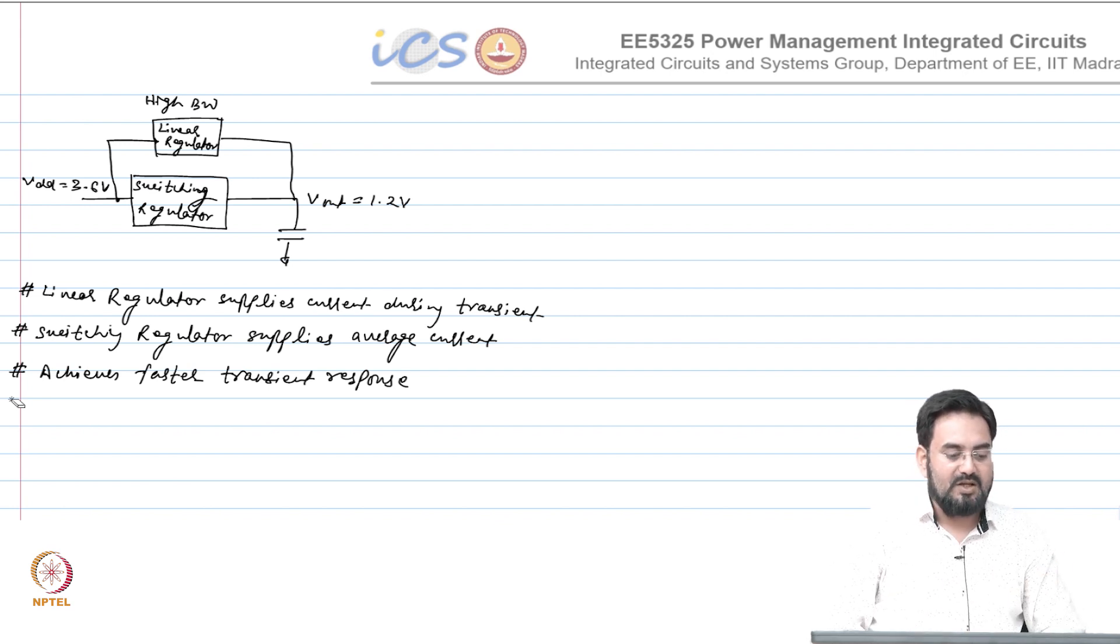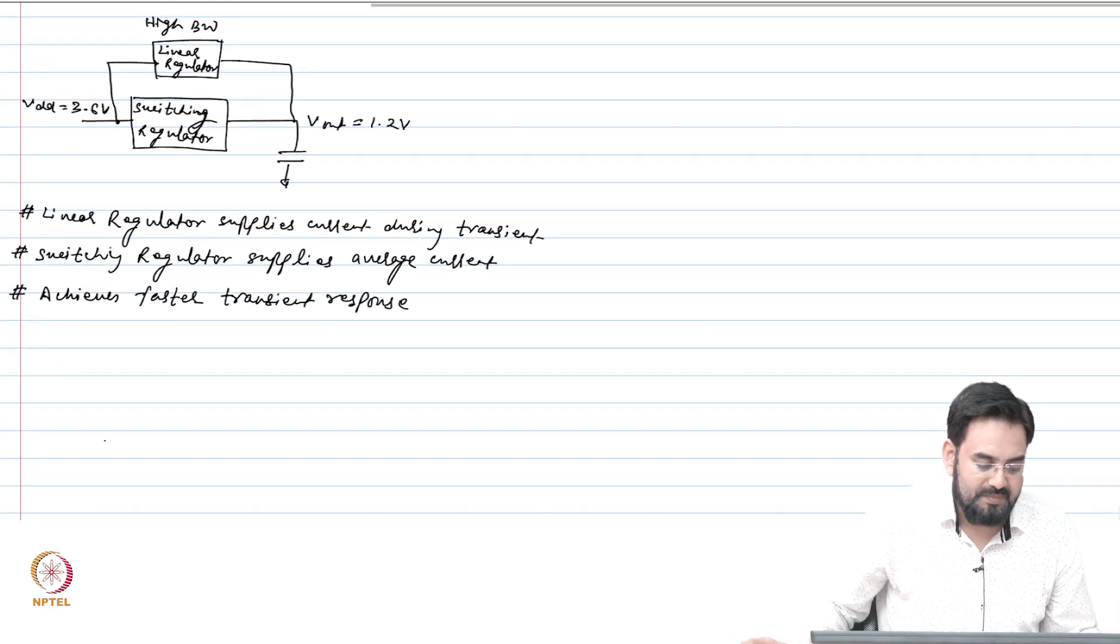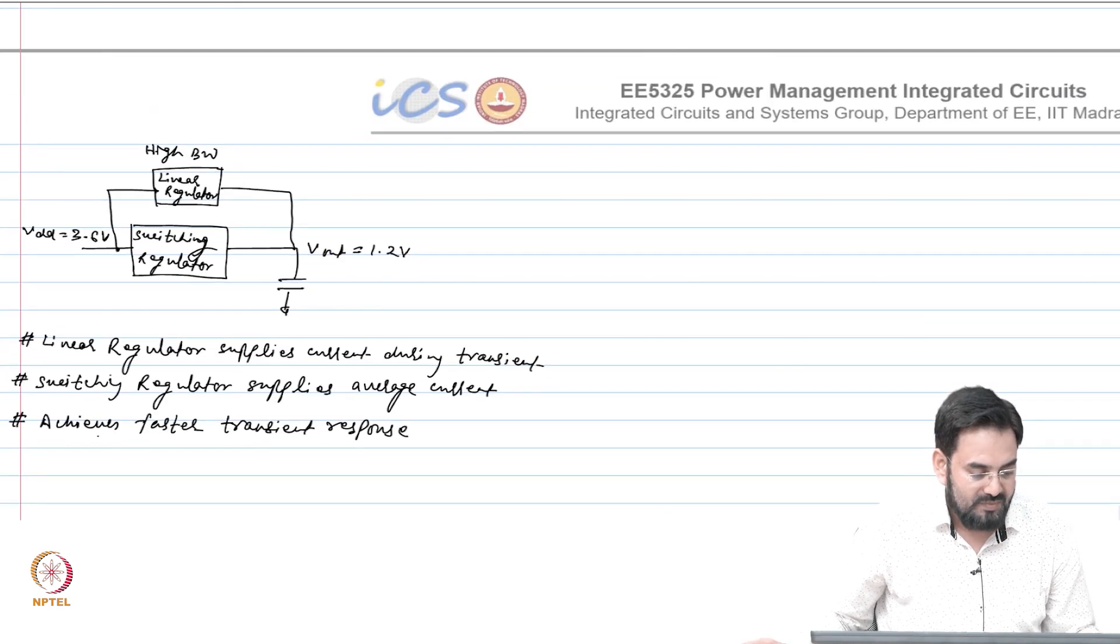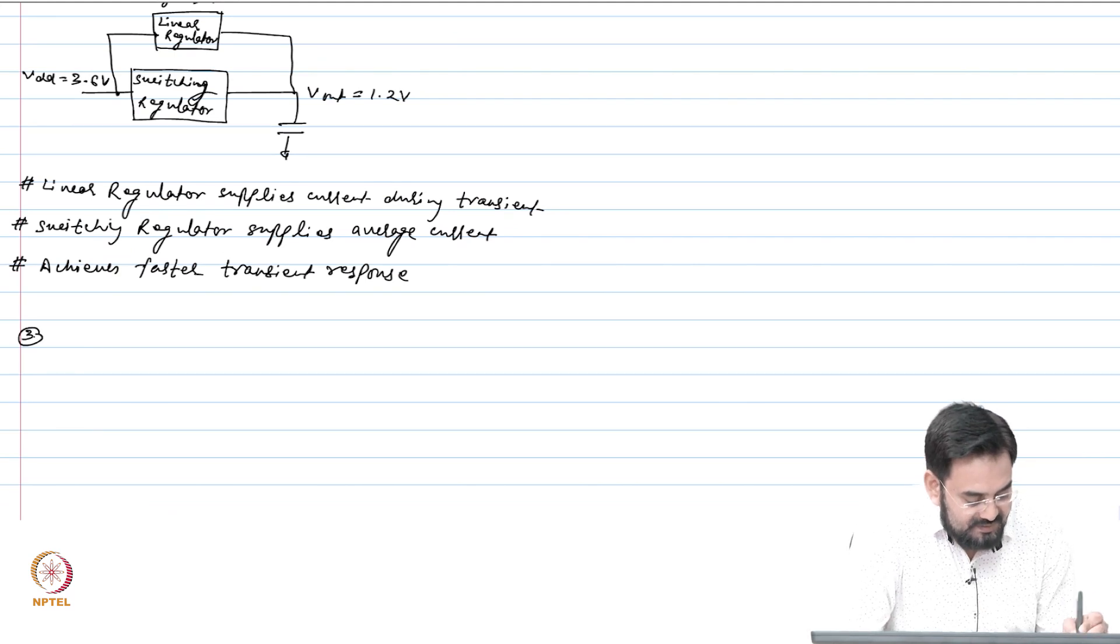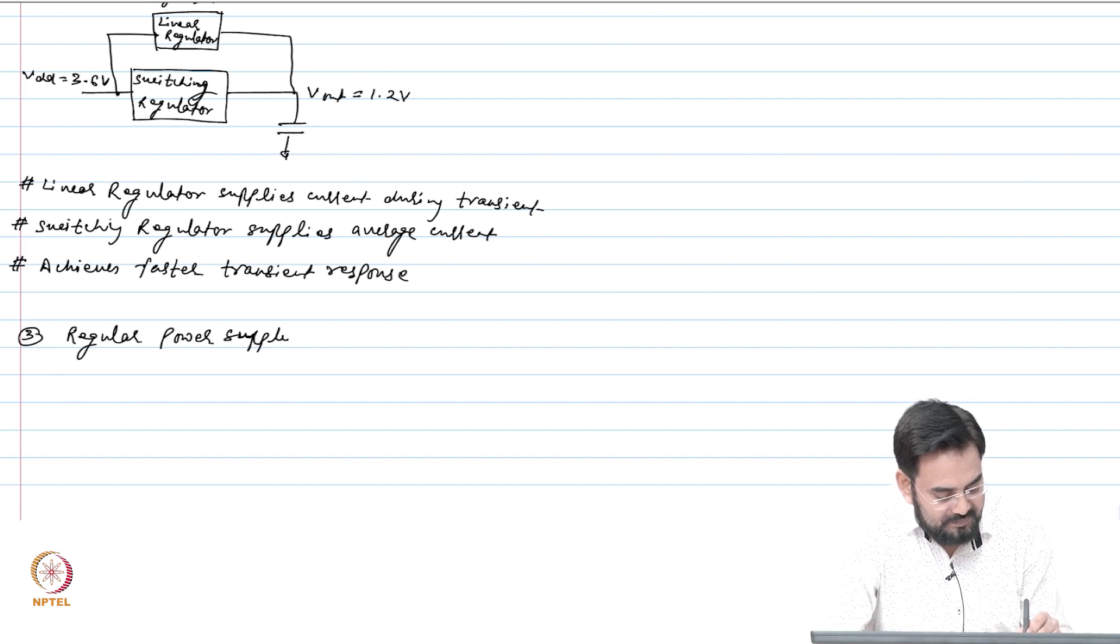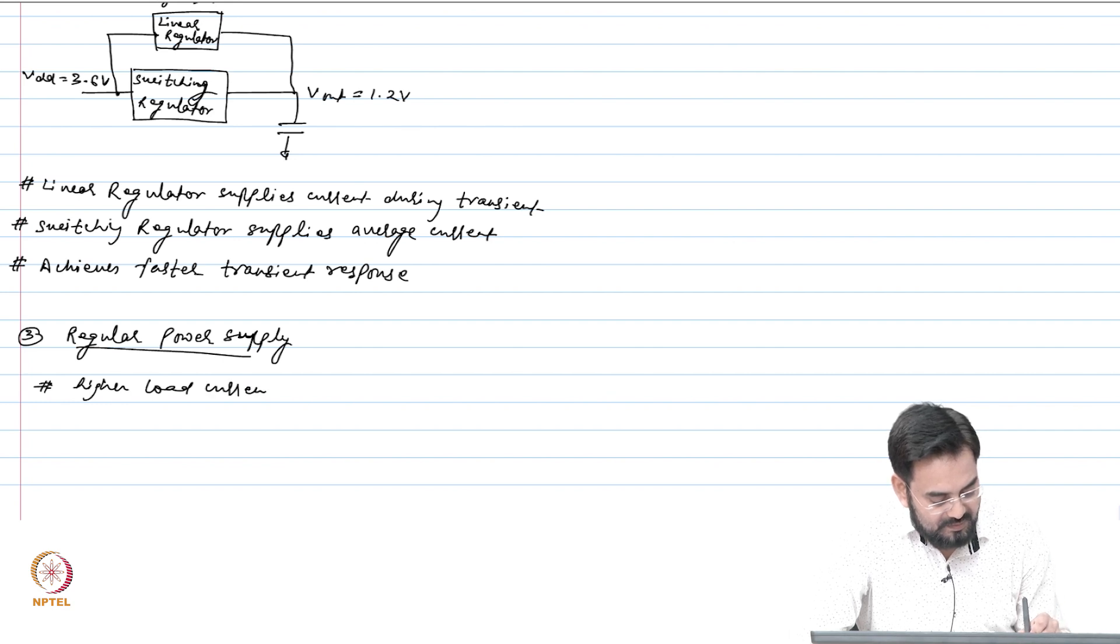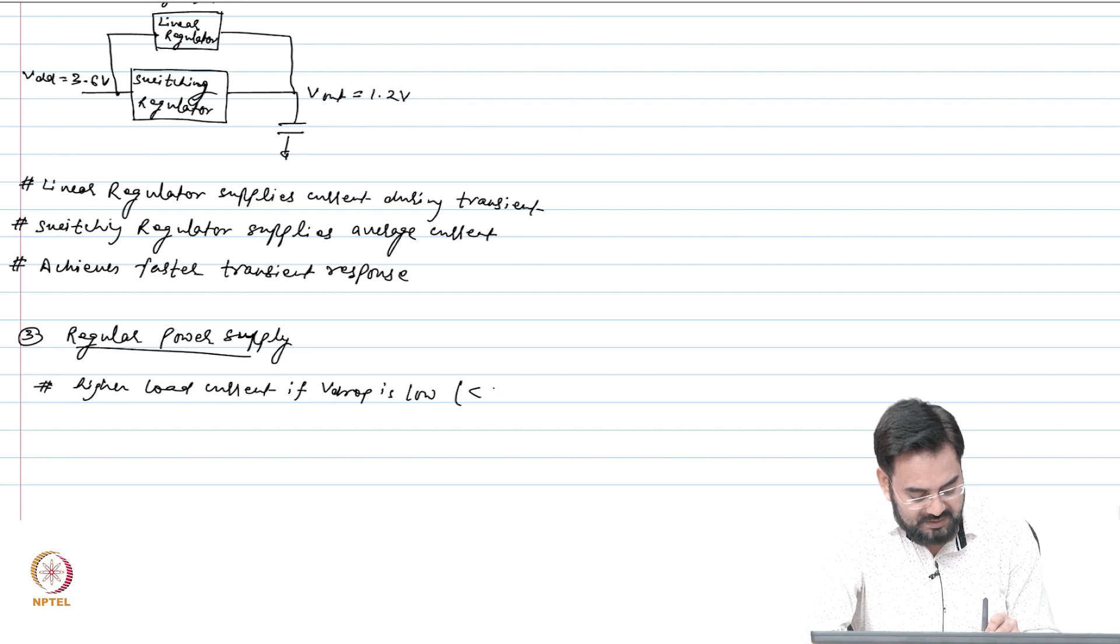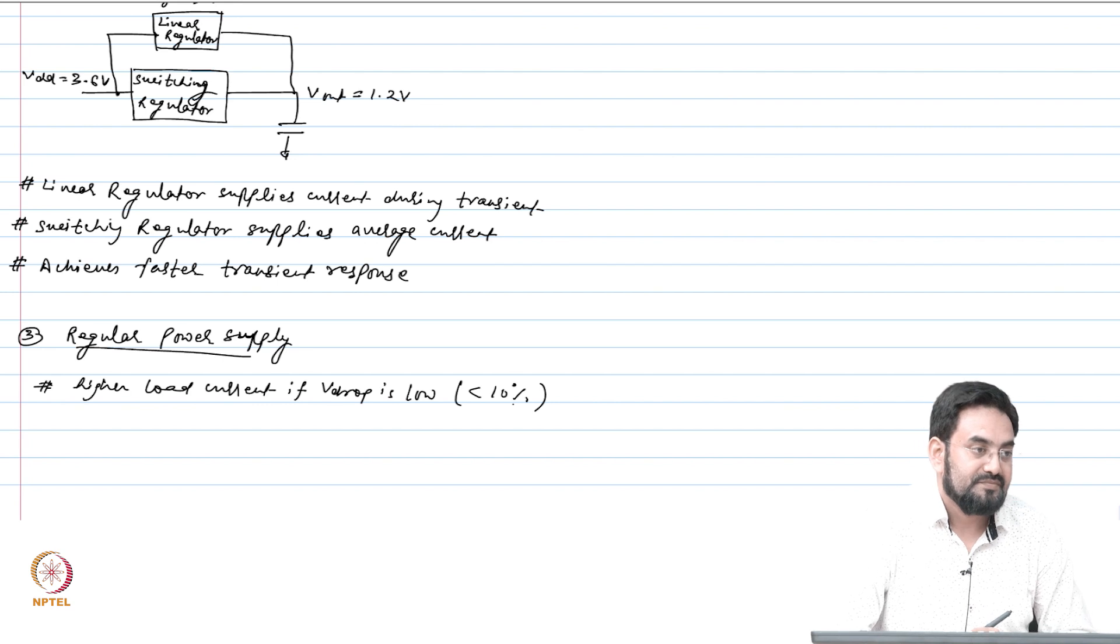It depends what kind of system you have. If you require this thing then you can add this linear regulator in parallel and basically get a better transient response. The third application could be regular power supply: higher load current output if Vdrop is low, usually less than 10 percent of the output.